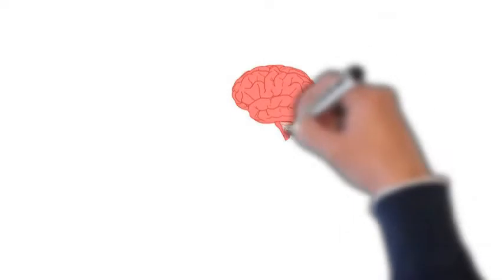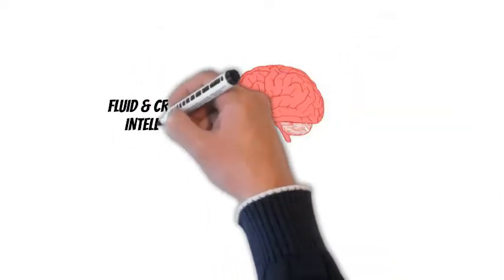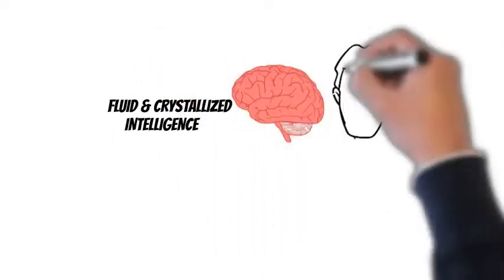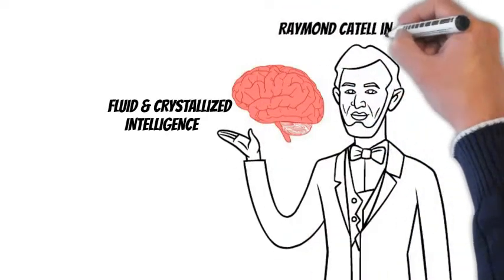There are two types of intelligences. We have the fluid intelligence and crystallized intelligence. Raymond Cattell coined these terms in 1963.